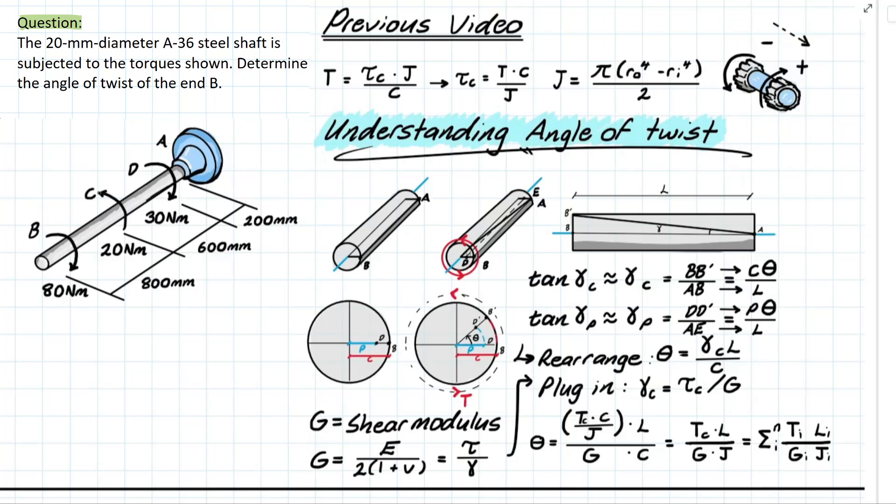Then following that we have at c a counterclockwise rotation which is going to act adversely to what was initially happening at that initial point d. So that is going to change the angle of twist at this point.